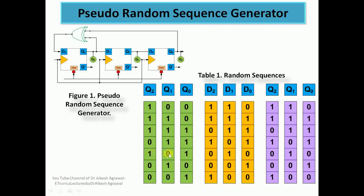Now the XOR of Q2=1 and Q0=1 gives 0, which goes to D2. Q2 goes to D1 and Q1 goes to D0, giving input condition 010. After the clock the next state is 010. Then the XOR of Q2=0 and Q0=0 gives 0, which goes to D2, and with Q1 going to D0 we have input condition 001. After the clock the next state is 001.